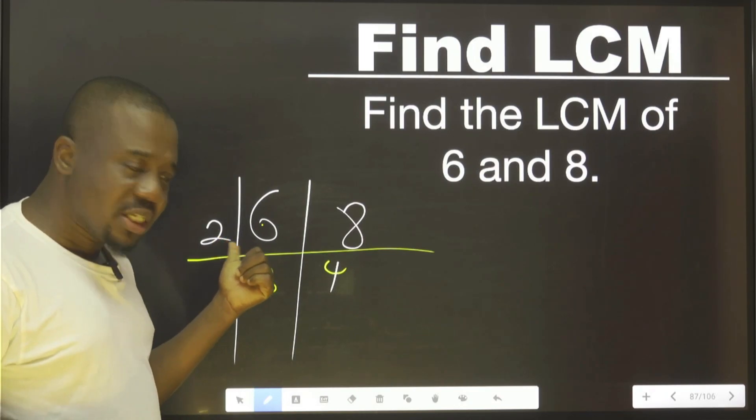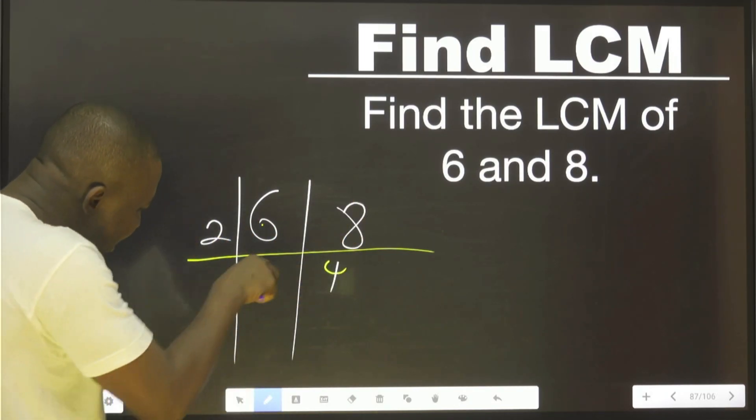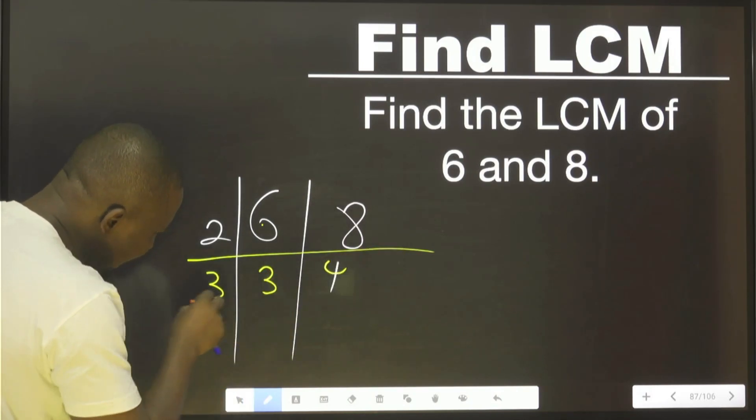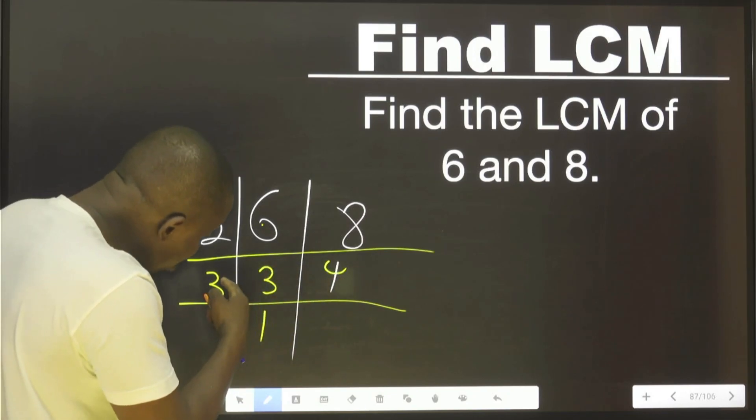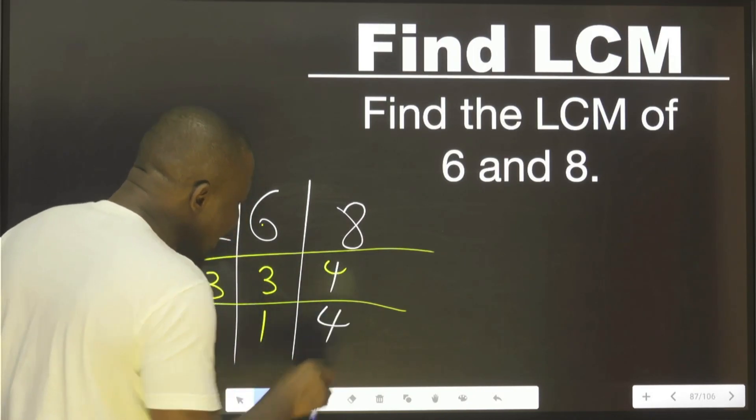But for instance, if it was not divisible, don't worry. Just transfer it. Now let's use three. I don't want to think about this guy. Three into this is one. I did not think about this. Now I want to use three to divide this. I cannot. What should I do? I drop it like that.